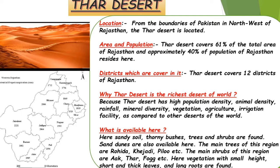The vegetation of the Thar Desert mainly consists of sandy soil, thorny bushes, small trees, and shrubs. The vegetation height is small, leaves are small and thin, and roots of trees and shrubs are deep and long. Sand dunes are also found here — large mounds of sand are called sand dunes. The common trees found here include Khejdi and Pilu. The shrubs found here are Aak, Thar, and Fog.